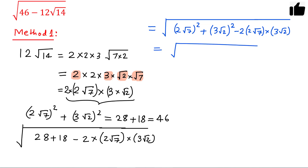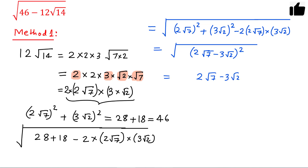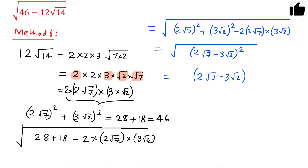We can now write this as (2 root 7 minus 3 root 2) whole squared. Taking the square root of this, since this is a positive square root and 2 root 7 is greater than 3 root 2, the answer is 2 root 7 minus 3 root 2. So this is the answer using Method 1.